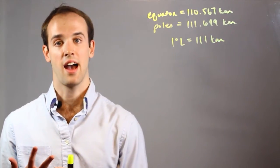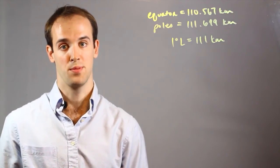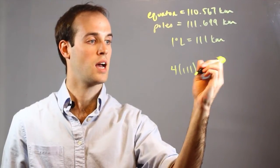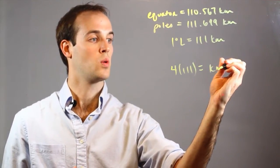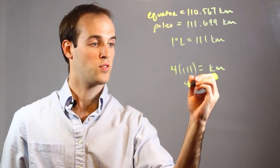Now let's say I wanted to find the kilometer distance for 4 degrees of latitude. I would simply plug in the 4 times 111 equals my kilometers and 4 times 111 is 444.